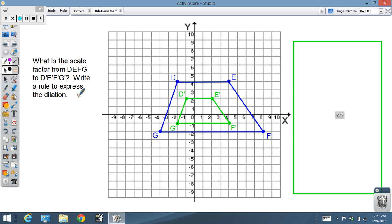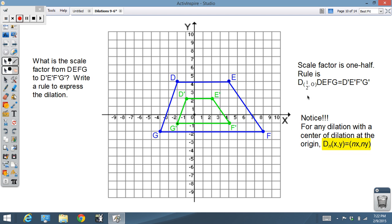Next problem. What is the scale factor from D, E, F, G, the bigger blue one, to D prime, E prime, F prime, G prime, the little green one, and write a rule? This one we're going to have to do by actually counting the sides or using the distance formula. I noticed that D, E itself is 1, 2, 3, 4, 5, 6 units long, where D prime, E prime is 1, 2, 3. We have cut everything in half. So that's written this way.